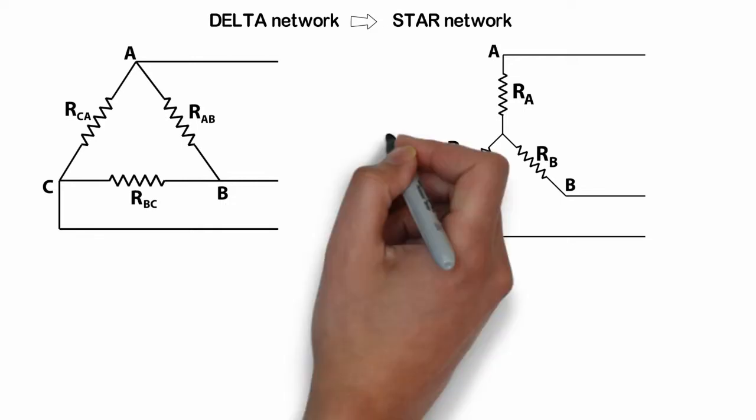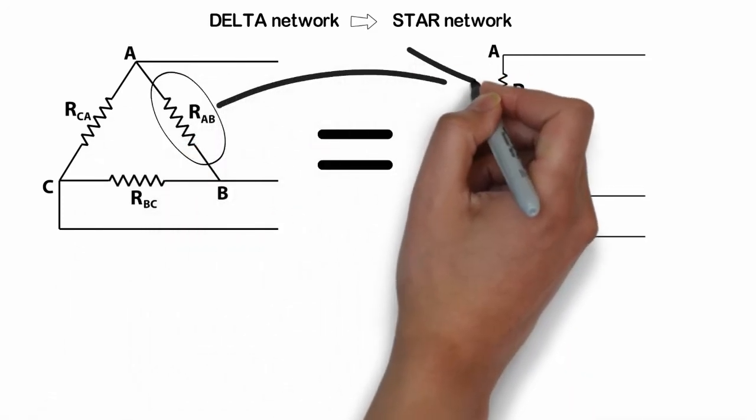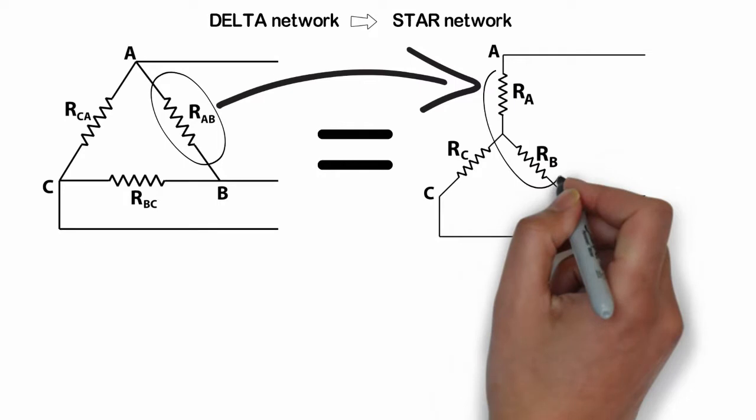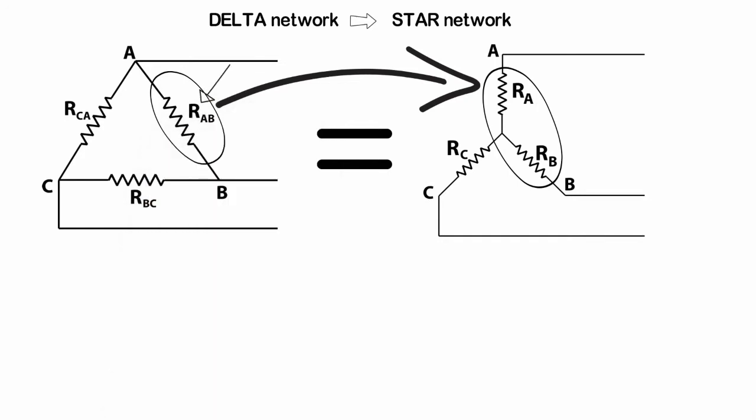The two arrangements will be electrically equivalent if resistance between any two terminals of one network equals the resistance between the corresponding terminals of the other network. Now if you look at the Delta network, the resistance between terminals A and B will be RAB parallel to RBC plus RCA, which equals RAB into RBC plus RCA divided by RAB plus RBC plus RCA.